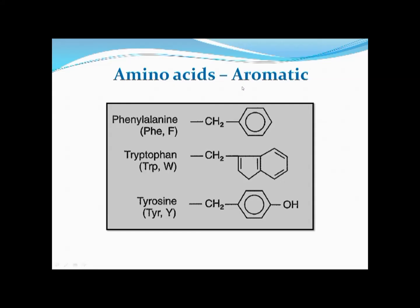Aromatic amino acids are those whose R group is aromatic. For example, phenylalanine (Phe, F) has a CH₂ group attached to a full phenyl ring as its side chain. Tryptophan also has an aromatic ring in its side chain. Tyrosine similarly has an aromatic ring.